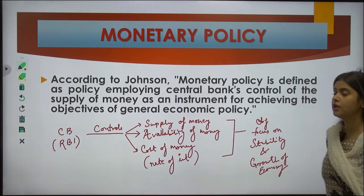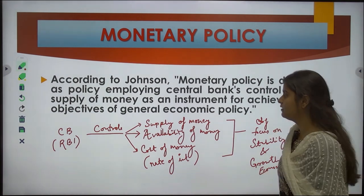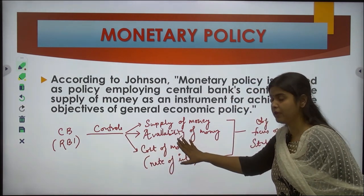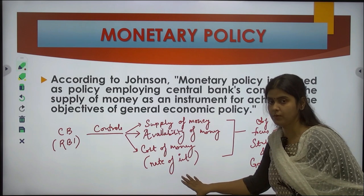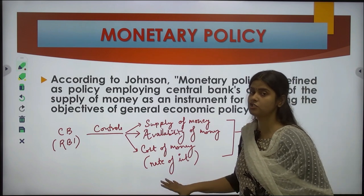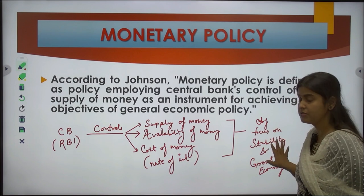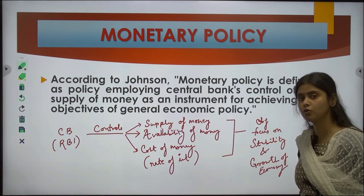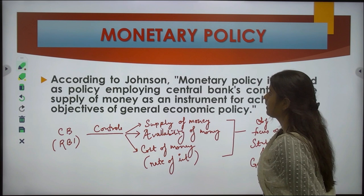Next is availability of money, that means loans. Next is cost of money, that means the rate of interest. And this is done to achieve the objective that focuses on stability and growth of the economy. In short, the central bank — RBI — controls the supply of money, availability of money, as well as cost of money, that means the rate of interest, to achieve stability and growth of the economy.